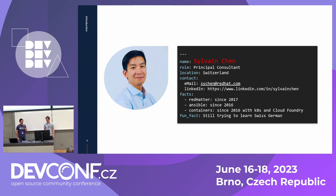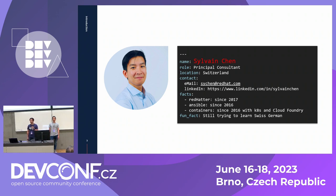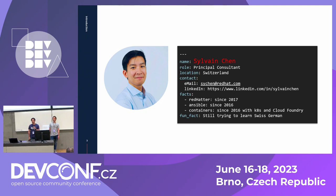Hello, everybody. I'm Sylvain Chen, a principal consultant at Red Hat. I joined in 2017 — it's my first DevConf and I'm very happy to be here. I've been working with containers for quite some years as well as with Ansible, and I'm glad today to present the work done combining my two favorite products: Ansible Automation Platform and OpenShift all together.